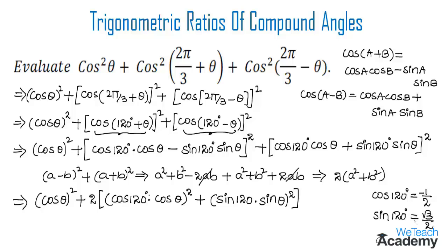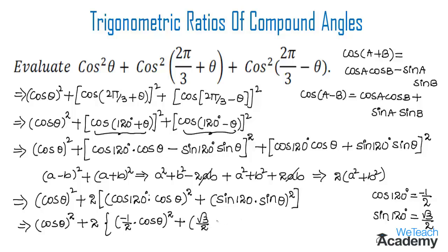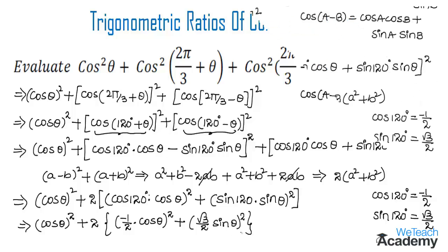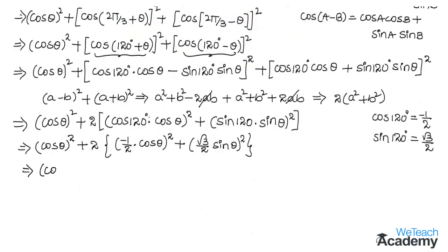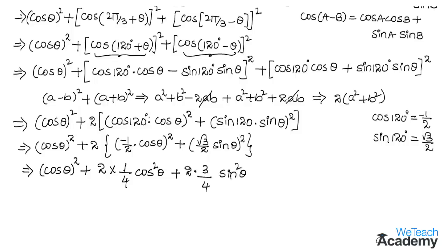Substituting both values, we get cos²θ + 2[(−1/2)·cosθ]² + 2[(√3/2)·sinθ]², which simplifies to cos²θ + 2·(1/4)·cos²θ + 2·(3/4)·sin²θ, giving cos²θ + (1/2)cos²θ + (3/2)sin²θ.